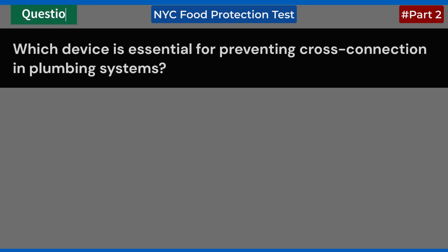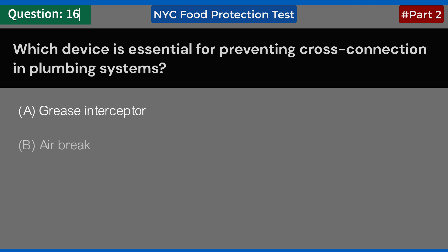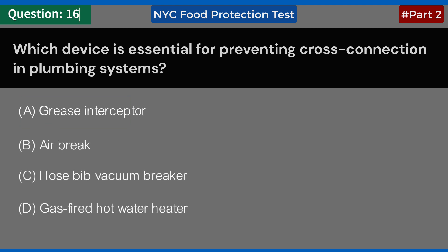Which device is essential for preventing cross-connection in plumbing systems? A. Grease interceptor. B. Air brake. C. Hose bib vacuum breaker. D. Gas-fired hot water heater. Answer: C. Hose bib vacuum breaker.